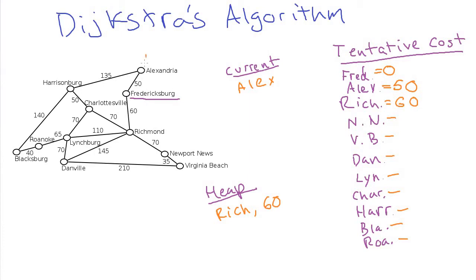We dequeue the next smallest item — Alexandria becomes our current city. We check Fredericksburg as a neighbor: the path back would cost 100 total, which is not better than zero, so we skip it. We then consider Alexandria's other neighbor, Harrisonburg. The 50 miles to Alexandria plus 135 to Harrisonburg gives 185, which is better than infinity. So we set Harrisonburg's tentative cost to 185 and enqueue it on the min heap. Then we're done with Alexandria.